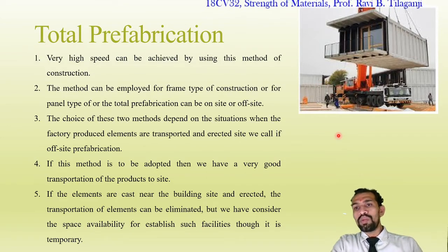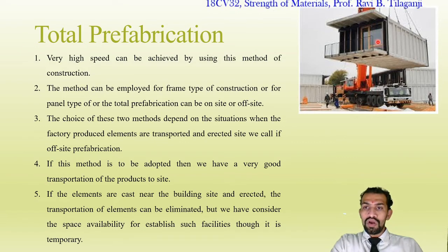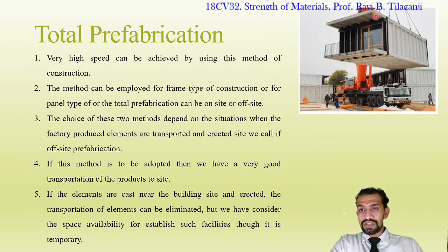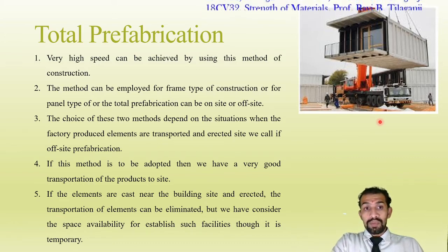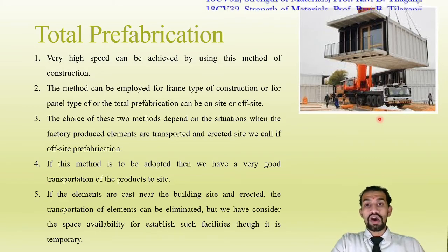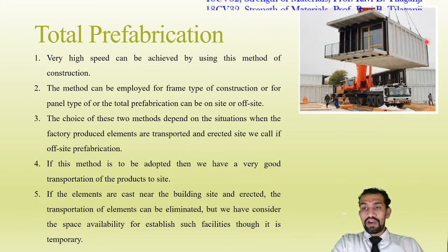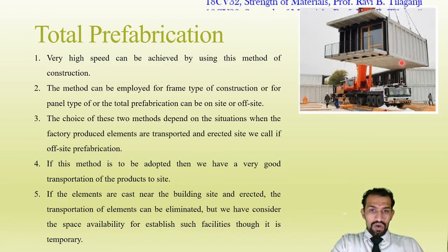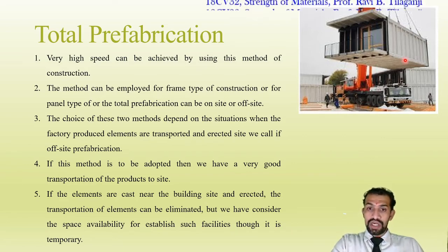Total prefabrication: the whole building with every element — including door and window panels fixed with glass, a balcony with railing, and slab projections — is prefabricated. This is a highly speed-efficient construction method. It can be employed for frame type or panel type of construction, where a single panel is used for particular lengths and for flooring as well.